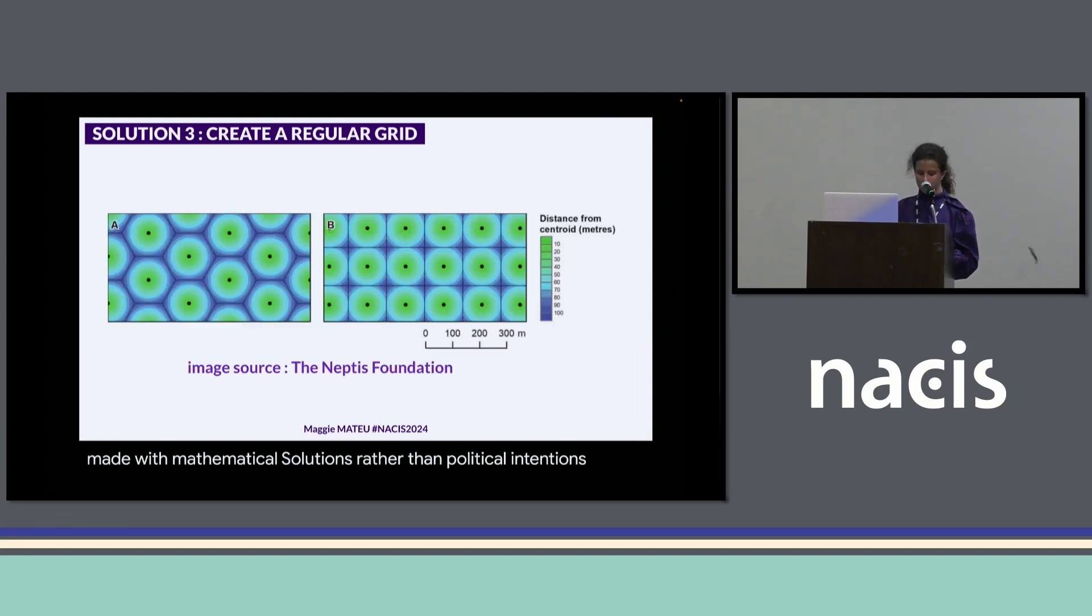The grid should ideally be made of hexagons, because hexagons reduce the sampling distortions caused by the sectional effects of the grid shape. Though here, you might say that we are still counting things inside of things. So we need to find another solution.